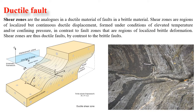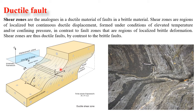Shear zones are formed under conditions of elevated temperature and confining pressure. In contrast to fault zones, which are regions of localized brittle deformation, shear zones are known as ductile faults. At elevated temperature and pressure, rather than discontinuity or breaking of material, the material shifts — we can see the lines becoming more parallel to the shifting direction. These zones are known as shear zones, and we can observe them in field photographs.